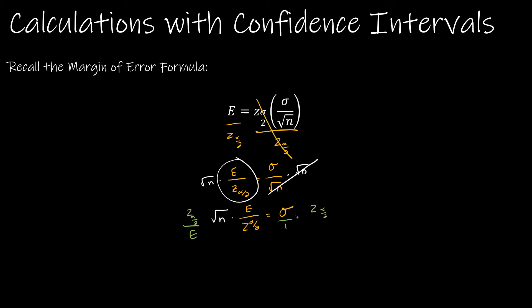Z of alpha over 2 divided by E. And what happens is that E cancels. The Z of alpha over 2 cancels and I get the square root of n. And on the right side, my numerator includes both sigma and Z of alpha over 2. And my denominator includes E.